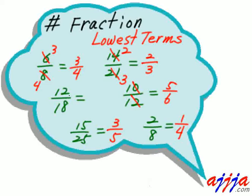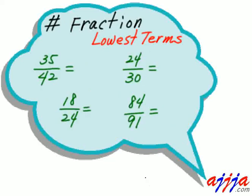What about this one — twelve over eighteen? If you cannot see the common factor right away, try subtraction first. Eighteen minus twelve is six. Try six: twelve divided by six is two, and eighteen divided by six is three. That's one way to find it.